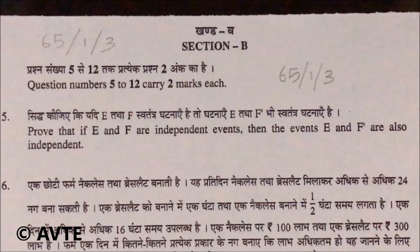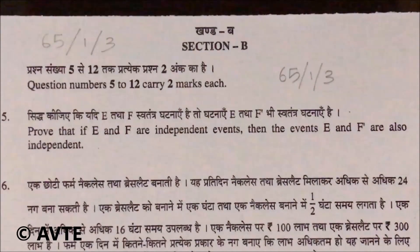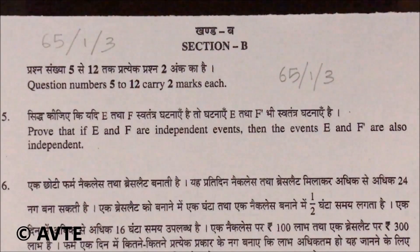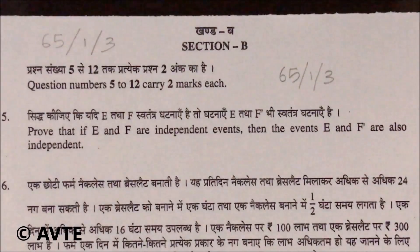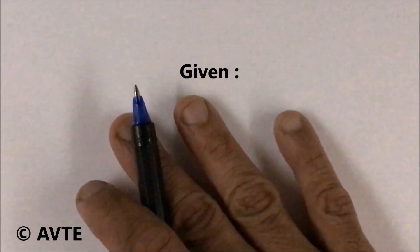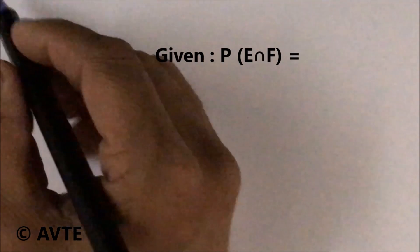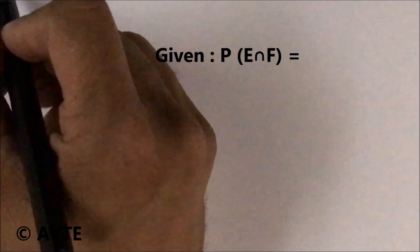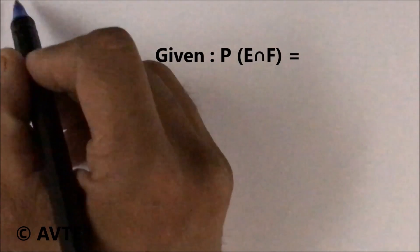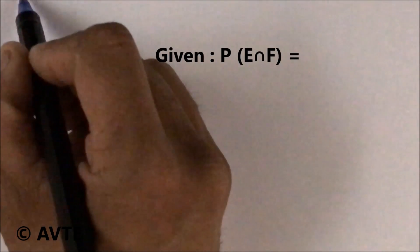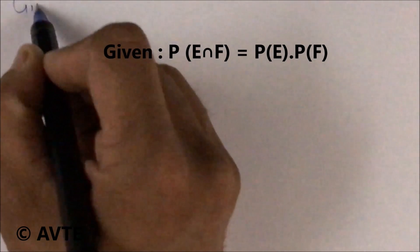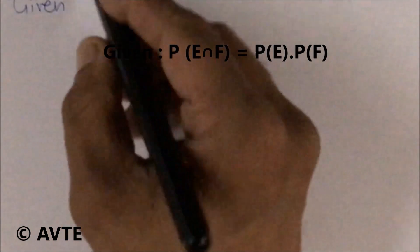Question number 5 says: prove that if E and F are independent events, then the events E and F' are also independent. This is a very simple question. Given: P(E ∩ F) = P(E) · P(F), they being independent.